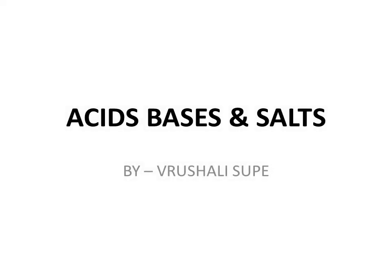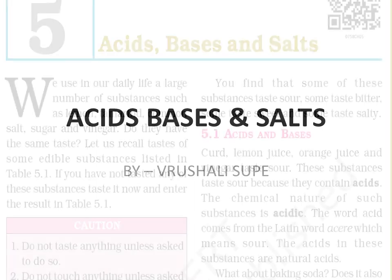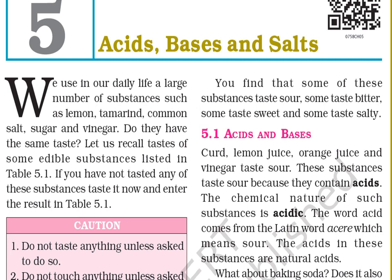Hello students, today we will see Chapter 5 of science, that is Acids, Bases and Salts. Under this chapter we will see what is meant by acids, bases and salts. On this page we will see information about acids, bases and salts. Some examples of substances are given, and among those we have to identify which are acidic, which are basic, and which are neutral — examples like lemon, tamarind, common salt, sugar, and vinegar.